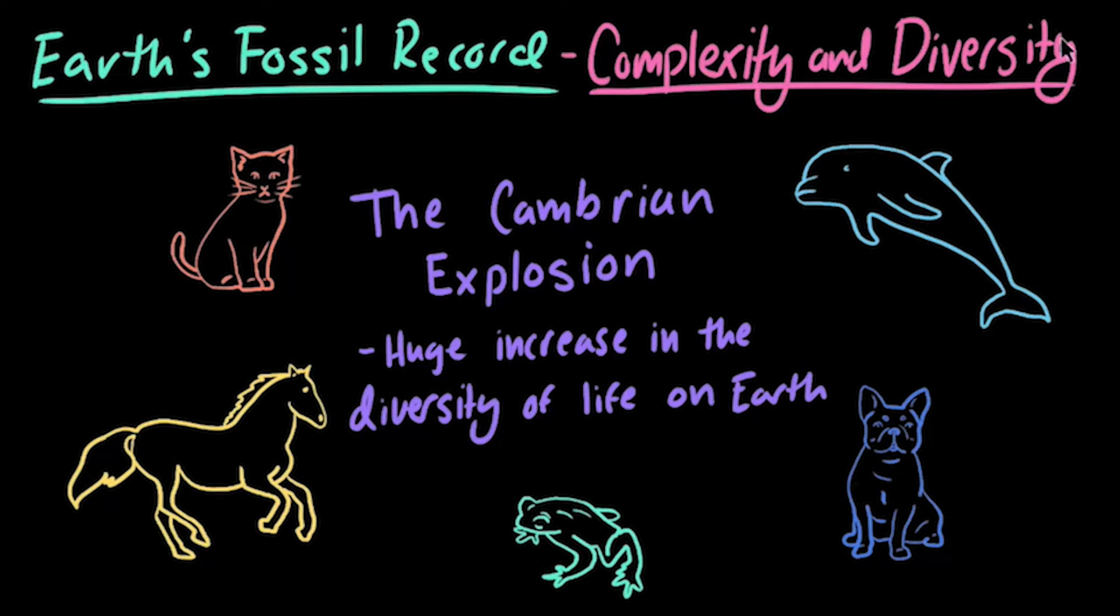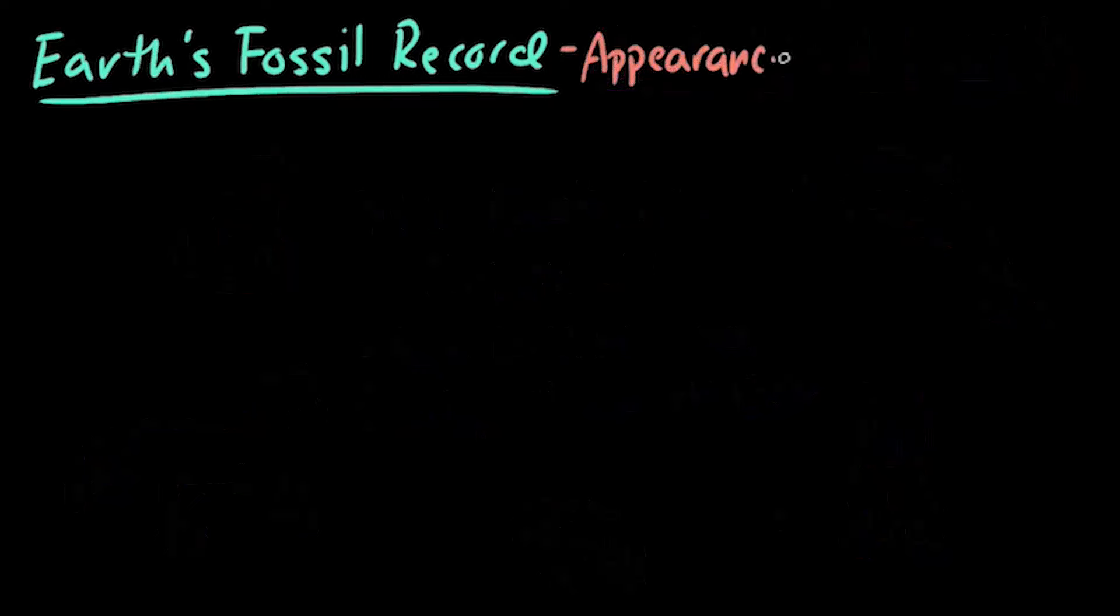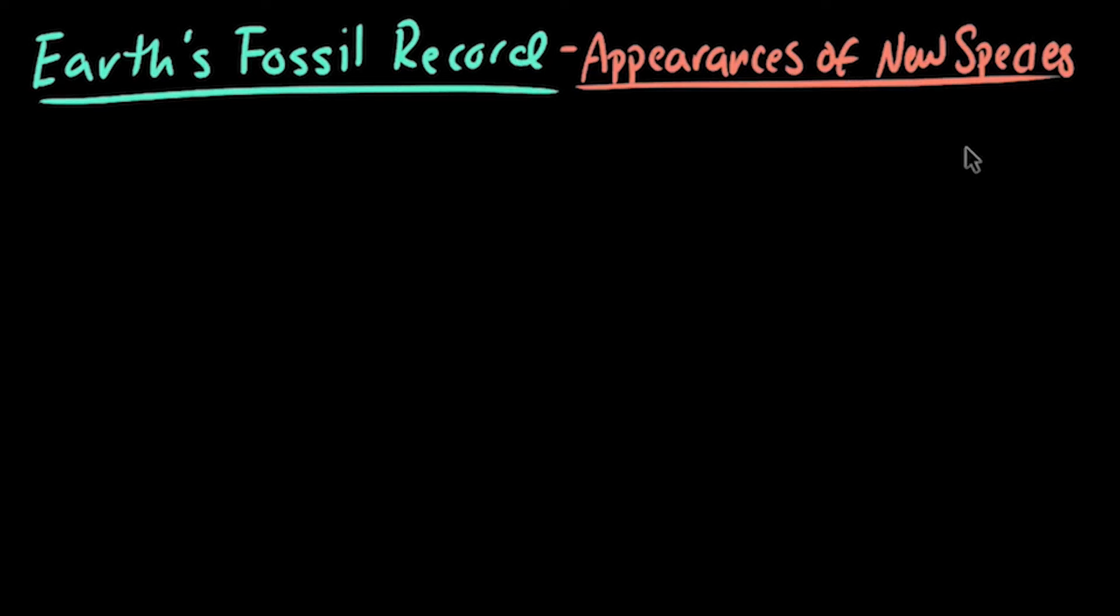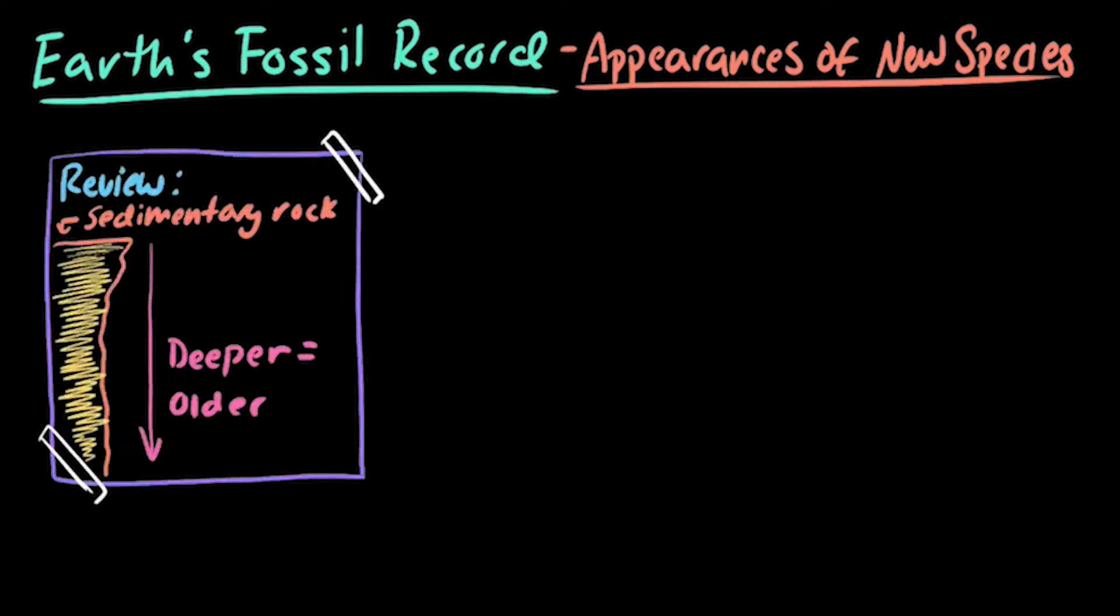All of these increases in complexity and diversity have given rise to the millions of varied organisms that live on Earth today. Next, let's take a look at the changes that can be seen along the evolutionary lineages in Earth's fossil record. But before we do that, let's quickly look back at how scientists study fossils.